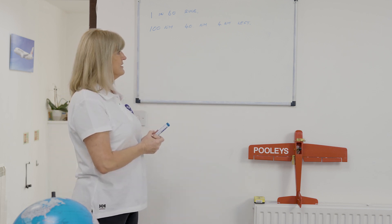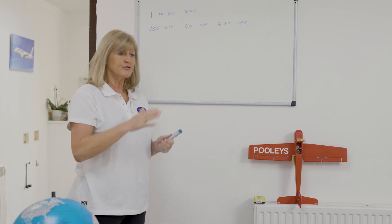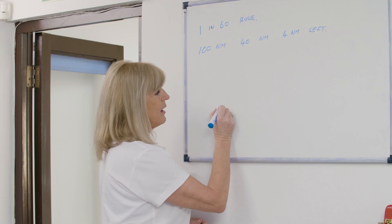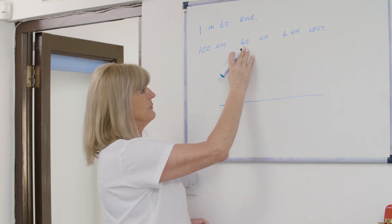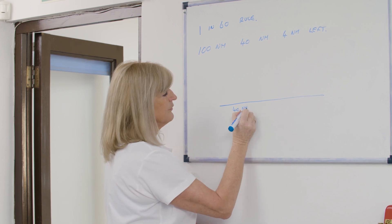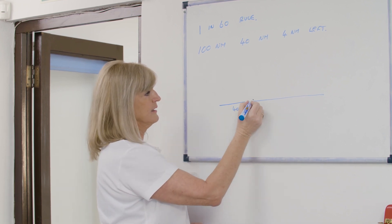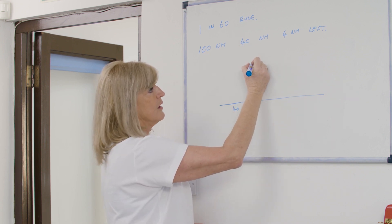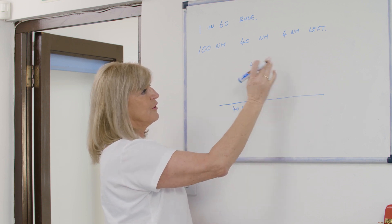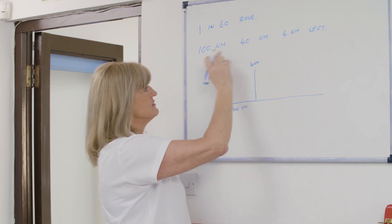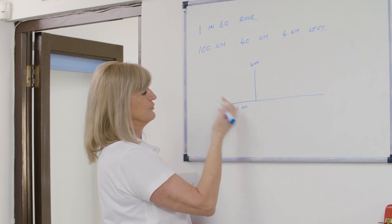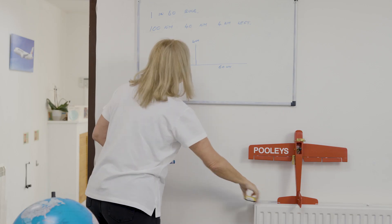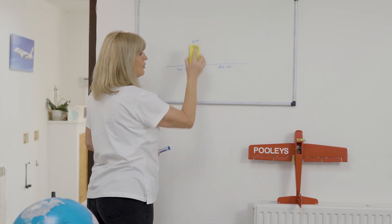The most important thing with this is draw a picture. If you draw a picture, you'll be absolutely fine. So let's draw the picture. There is my 100 nautical mile track. 40 nautical miles along track, I realise I am left — so make sure you draw your line to the left — by 4 nautical miles. They want to know what I have to turn to get back on track. Since it's a total of 100 nautical miles, I know I've got 60 nautical miles to run.